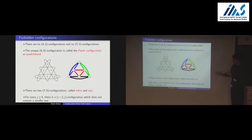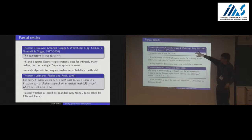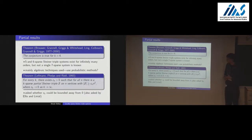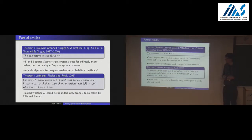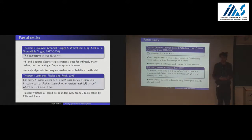The conjecture says you have Steiner triple systems with these forbidden configurations. In a long sequence of papers by various teams, the conjecture was proved for K equals 4: there are Pasch-free Steiner triple systems for any admissible large enough N. For K equals 5 and 6 you can find them for infinitely many orders, but for K equals 7 not a single one is known. The tools up to this point are mainly algebraic, based on symmetries.